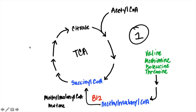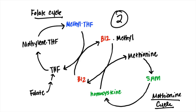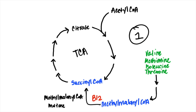In this video we're going to be talking about two essential cofactors: B12 and folate. Just a little disclaimer — I'm going to be discussing some material you don't quite need to know for class yet, but I think it gives you a better understanding of why B12 and folate are important. We'll look at a simple drawing of the citric acid cycle, the folate cycle, and the methionine cycle.